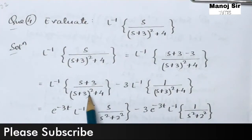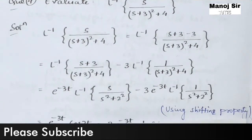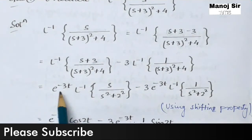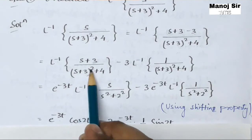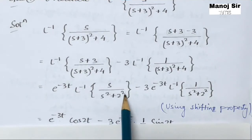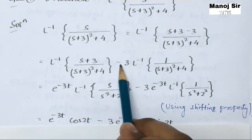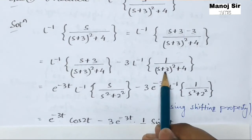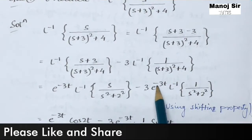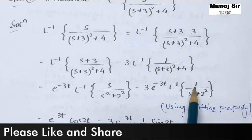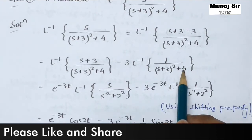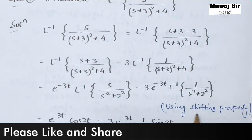Applying this shifting property, the value of a here is −3. So we get e^(−3t) times inverse Laplace transform of s/(s² + 4), where s² + 4 can be written as s² + 2². Similarly, in the second term, by the shifting property we get e^(−3t) times inverse Laplace transform of 1/(s² + 2²).